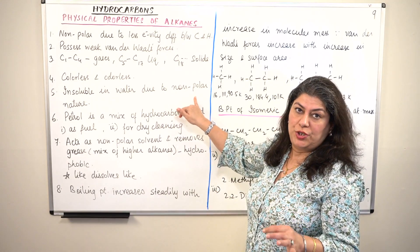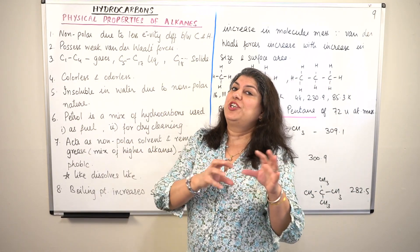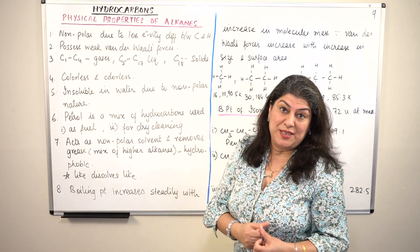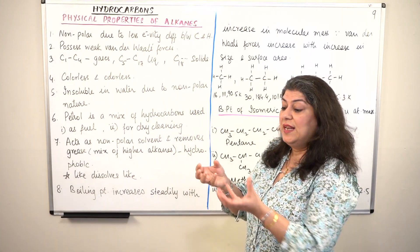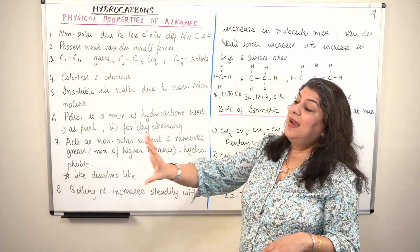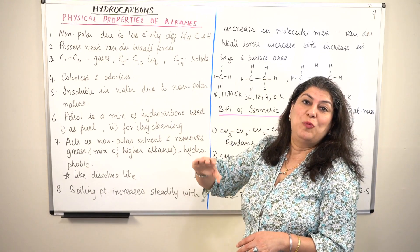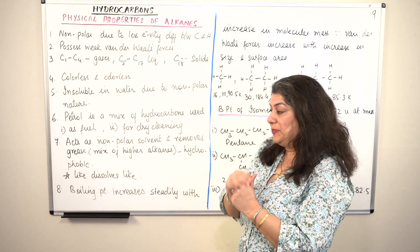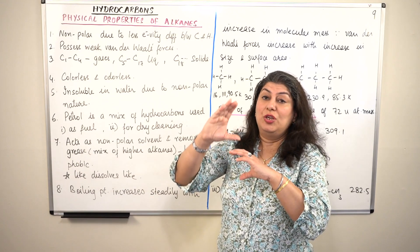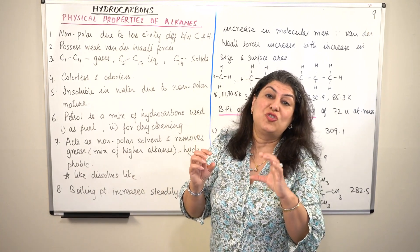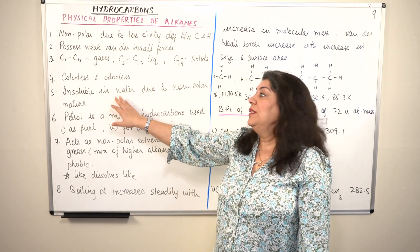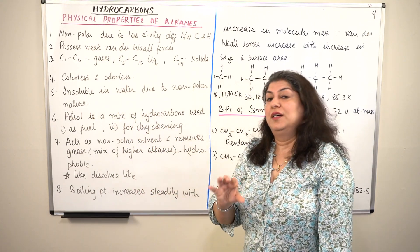Since alkanes are non-polar in nature, and water is a polar solvent, alkanes do not dissolve in water. Water, being polar covalent, dissolves polar and ionic substances but not non-polar ones. If you put oil over water and shake the bottle, the oil will always float on top because oil is basically hydrocarbons — non-polar — while water is polar. So these alkanes are insoluble in water.